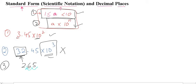Moving the decimal left gives us 2.65. We moved the decimal 2 places to the left, so it becomes 2.65 times 10 to the power 2. When we move the decimal from right to left, the power is positive.